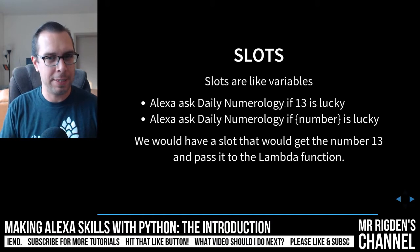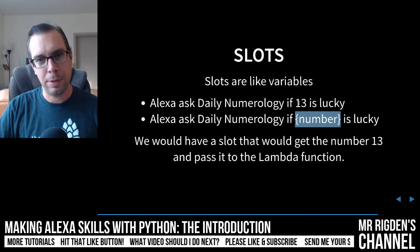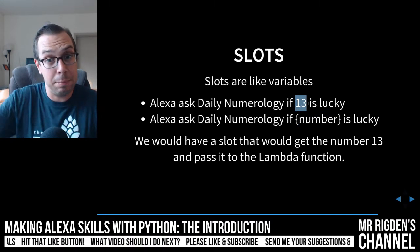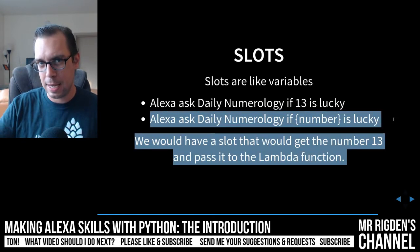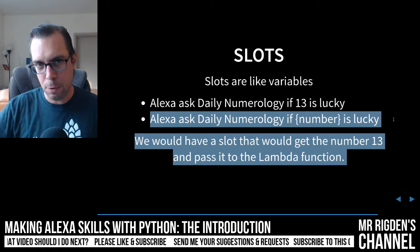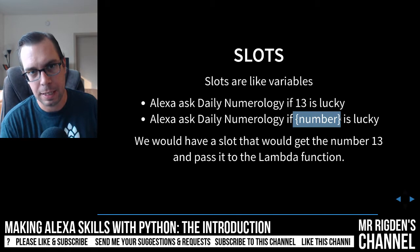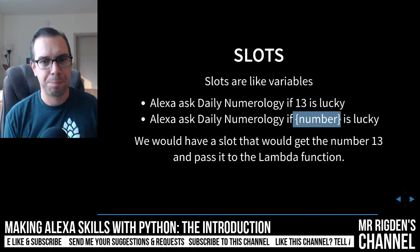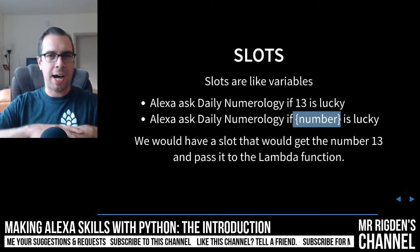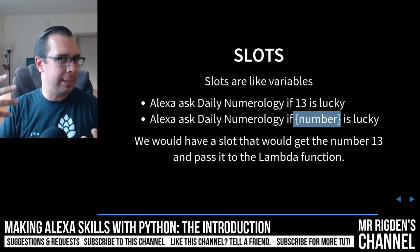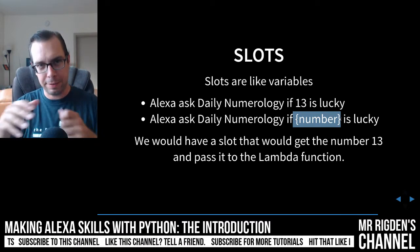Slots are like variables. For example, 'Alexa, ask Daily Numerology if 13 is lucky' — that 13 could be replaced with 7, 8, 9, or any number. When writing utterances for what people will say to invoke our skill, we use slots to represent variable values. That slot then gets passed to our Lambda function. This is just a high-level overview — we'll go much deeper into each concept in separate videos.